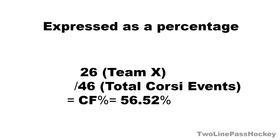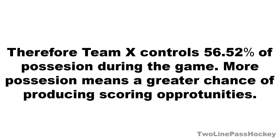Corsi can also be expressed as a percentage. Here we have Team X's 26 Corsi events divided by the 46 total Corsi events during the game, equals a Corsi For percentage advantage for Team X of 56.52%. This means that Team X controls 56.52% of all possession in the game.